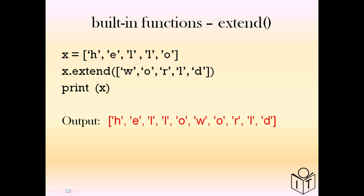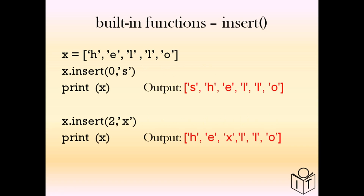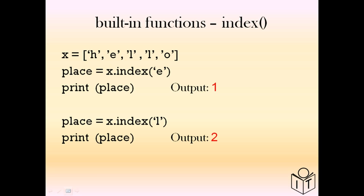Using 'extend', the list values are added individually, so here we have 'hello world' all in just one list. Other built-in functions include 'insert', which inserts a value at a set position — useful for inserting at the beginning with insert(0, ...) or at any position. To find a value's position in the list use 'index'. For example, index('E') returns 1, and index('L') returns 2, the position of the first occurrence of 'L'.